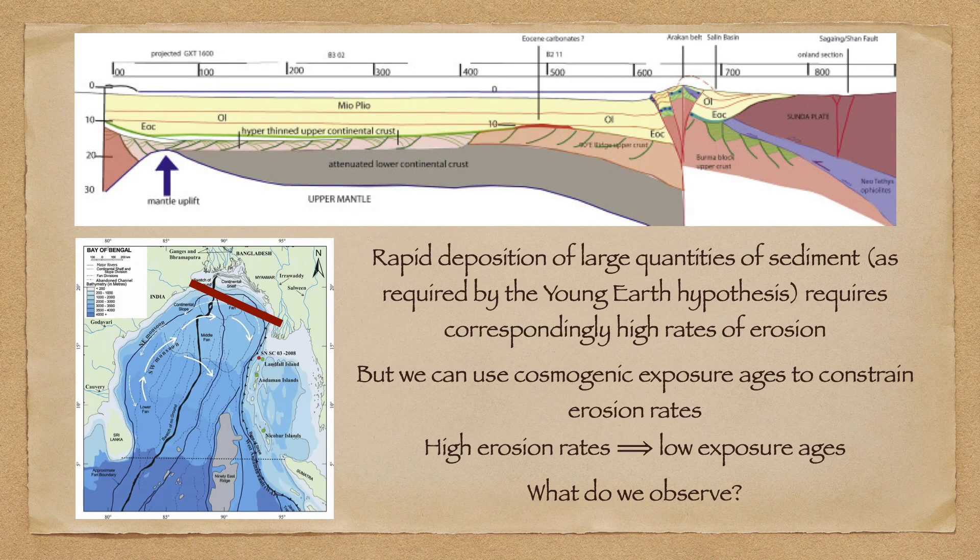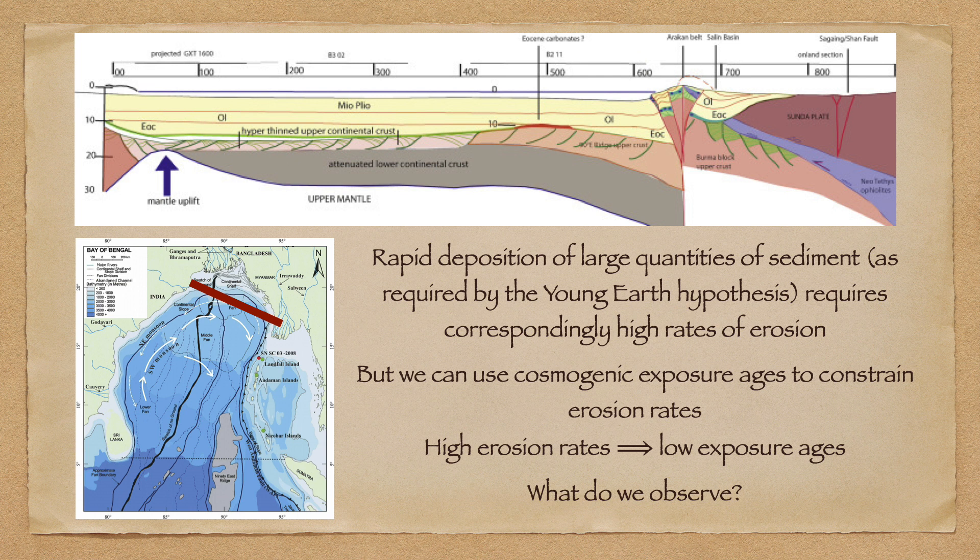We can apply exactly the same analytical techniques to other erosional settings. For instance, at the northern edge of the Bay of Bengal, there is a fluvial sedimentary layer that is more than 10 kilometers thick. In order for such a sedimentary layer to have accumulated under the young earth creationist timeline, regional erosional rates need to be extremely high, and correspondingly cosmogenic exposure ages should be extremely low.